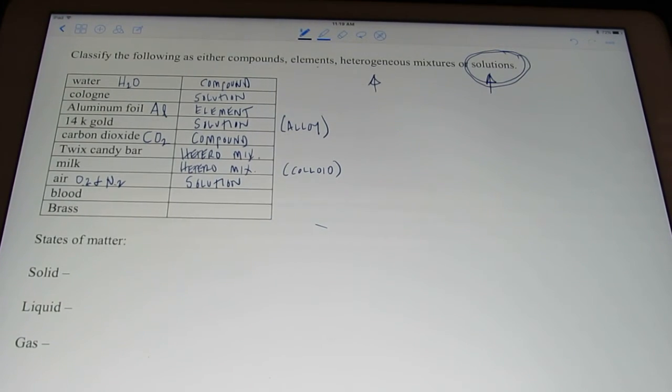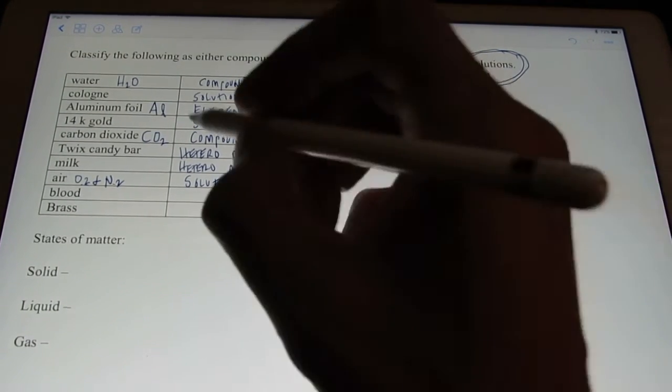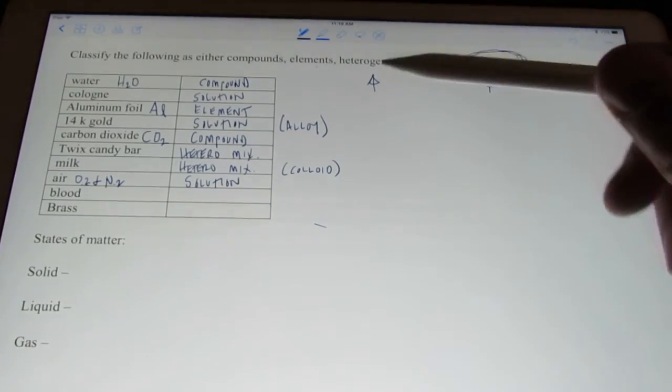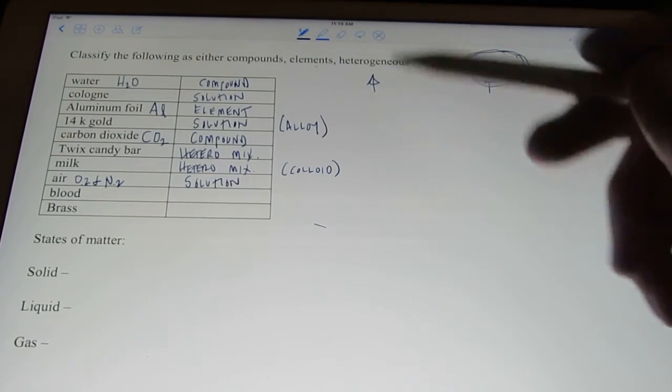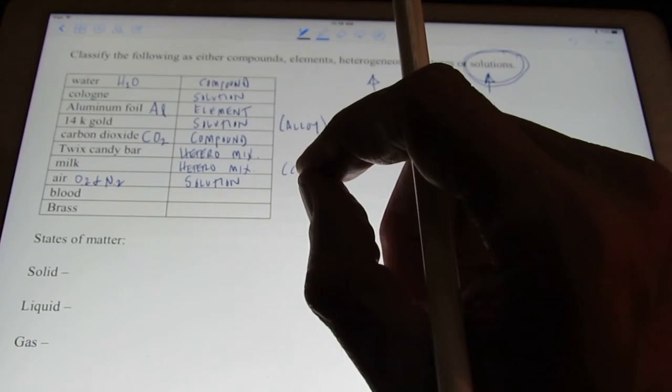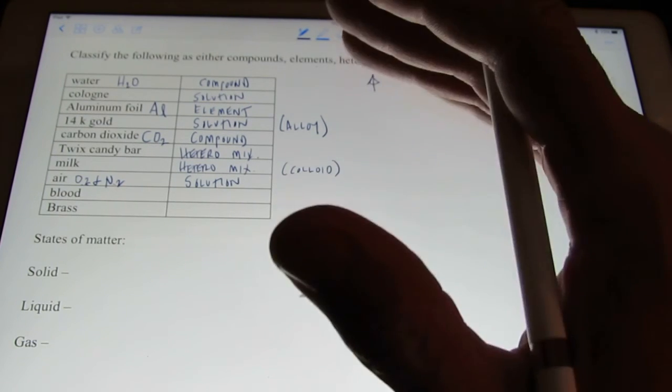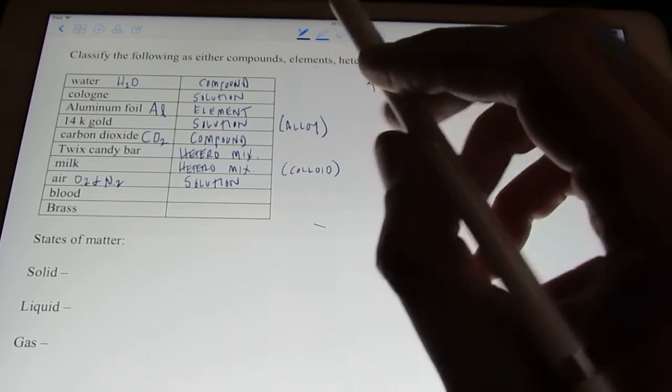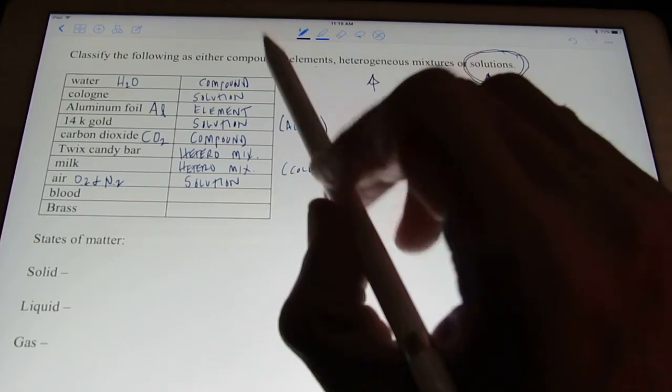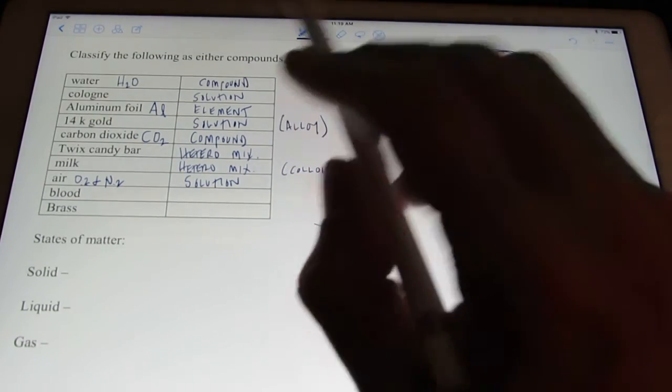Next up, blood. Let's see. Blood. We're mostly water. And then there's some red blood cells. There's some white blood cells. There's probably lots of salts and proteins and such that are dissolved in that blood. So, it's not an element. It's not a compound. It's a mixture.